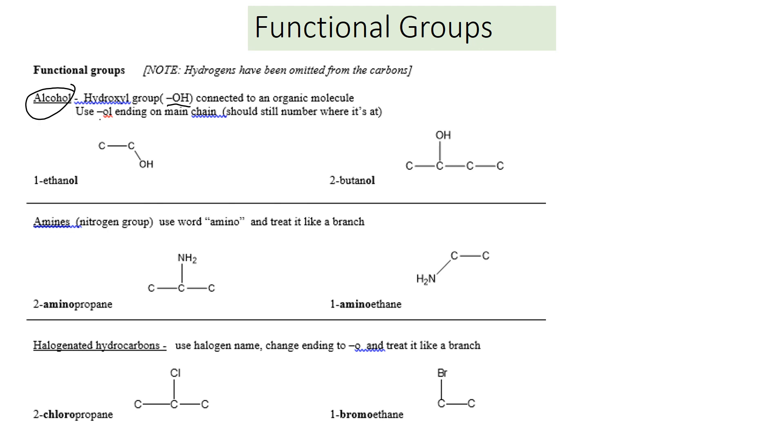The ending is OL. This example here, ethanol, ends in OL, so it's an alcohol. Alcohol has a carbon group that we abbreviate as R and then an OH. Here's another example, 2-butanol.